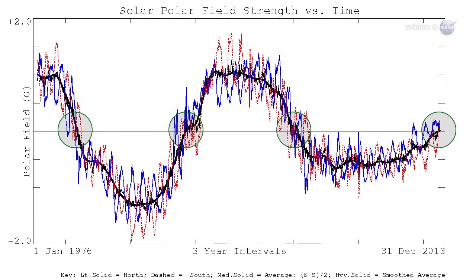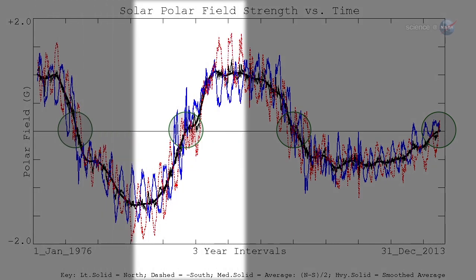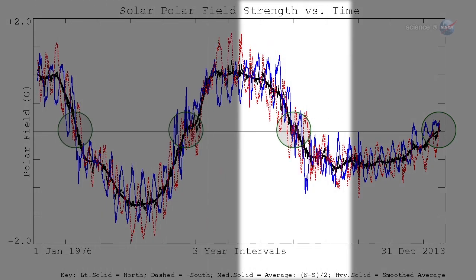Magnetograms at Wilcox have been tracking the Sun's polar magnetism since 1976, and they have recorded three grand reversals, with a fourth in the offing.